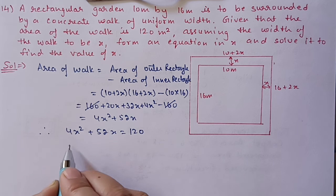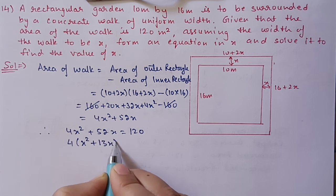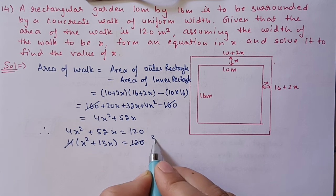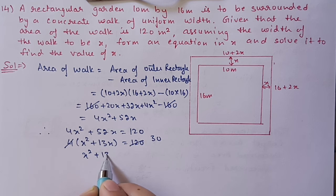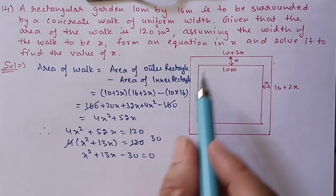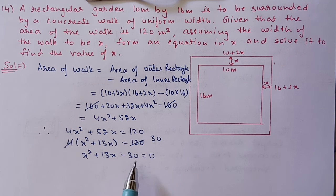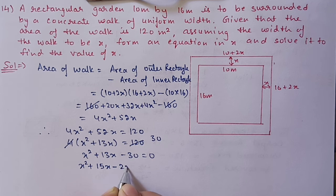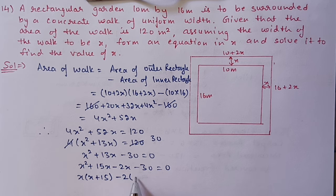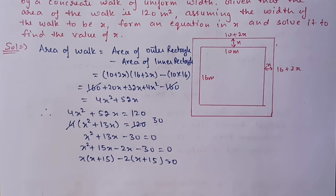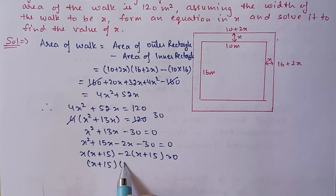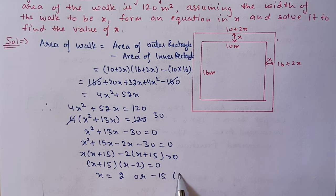This area of walk is given as 120 square meters, so 4x² + 52x = 120. Taking 4 as common: x² + 13x = 30. Shifting: x² + 13x − 30 = 0. Factoring with 15 and 2: (x + 15)(x − 2) = 0. So x = 2 or x = −15. Since length cannot be negative, x = −15 is not applicable. Therefore, width of the walk is 2 meters.